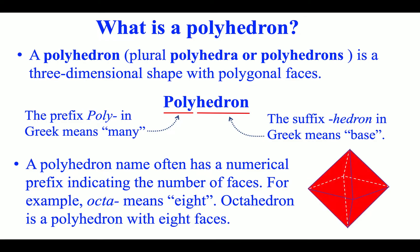A polyhedron name often has a numerical prefix indicating the number of faces. For example, octa means eight. Octahedron is a polyhedron with eight faces.